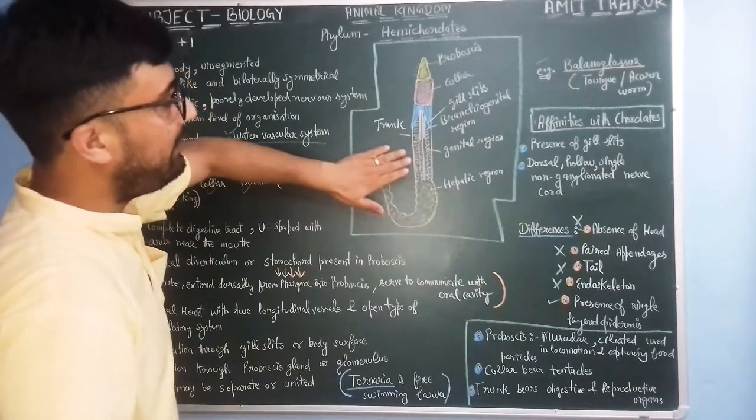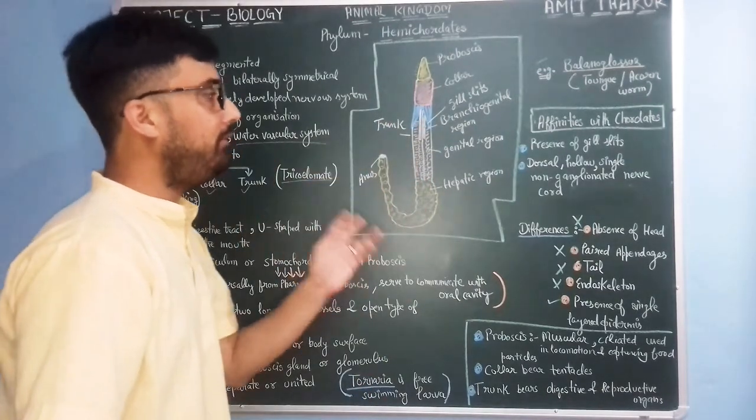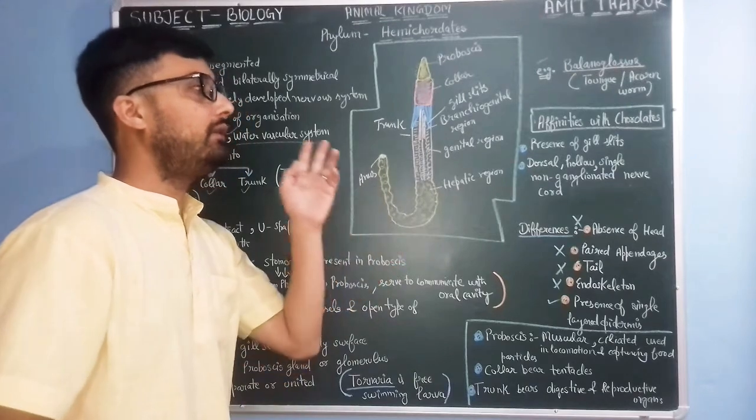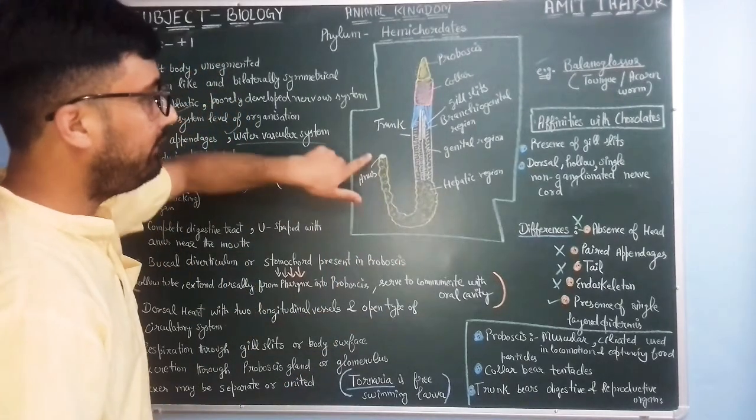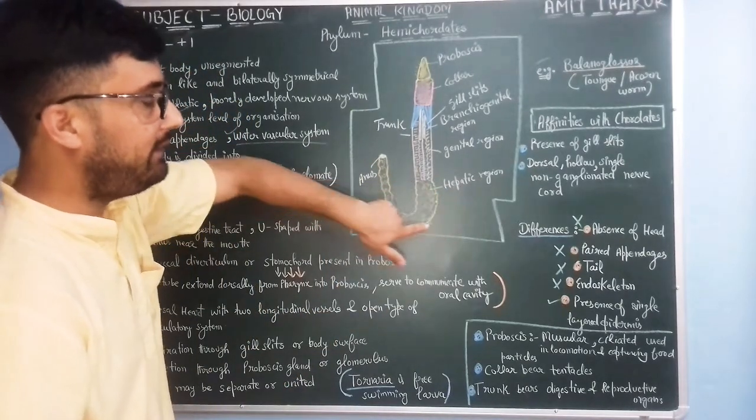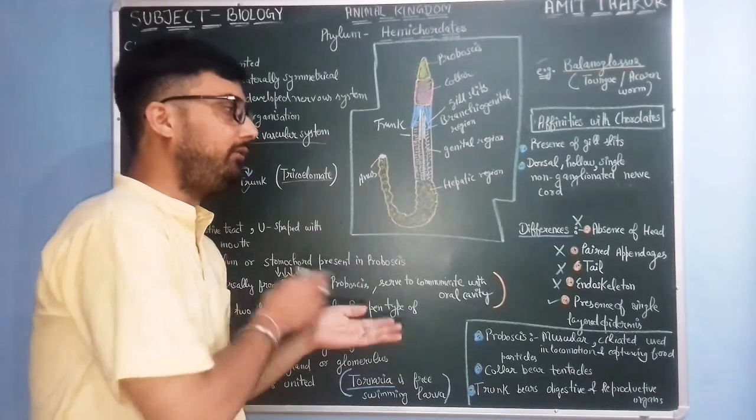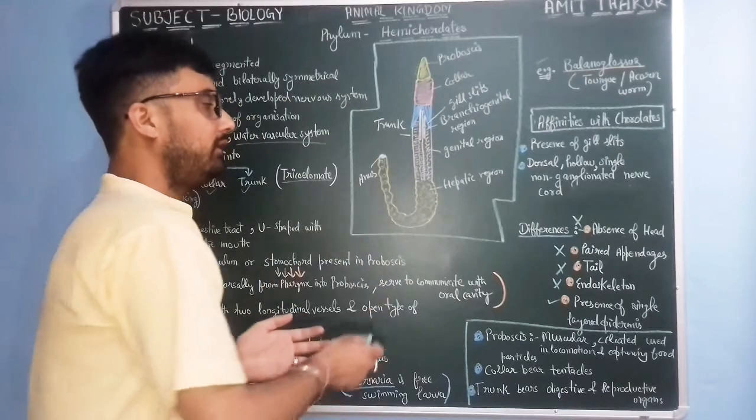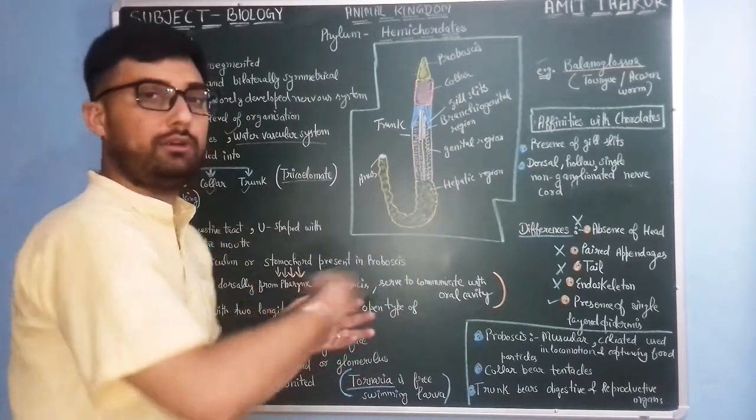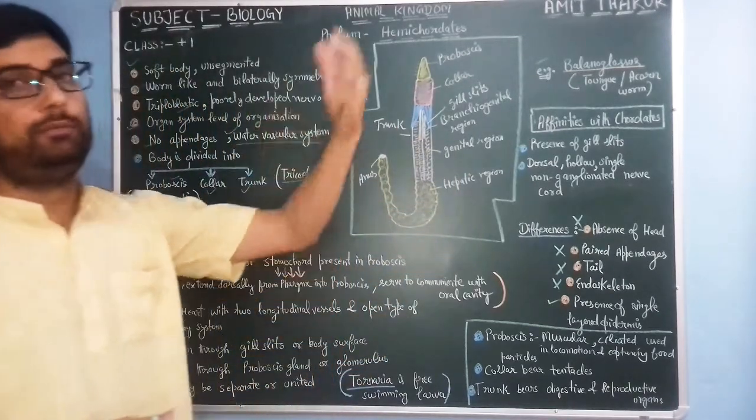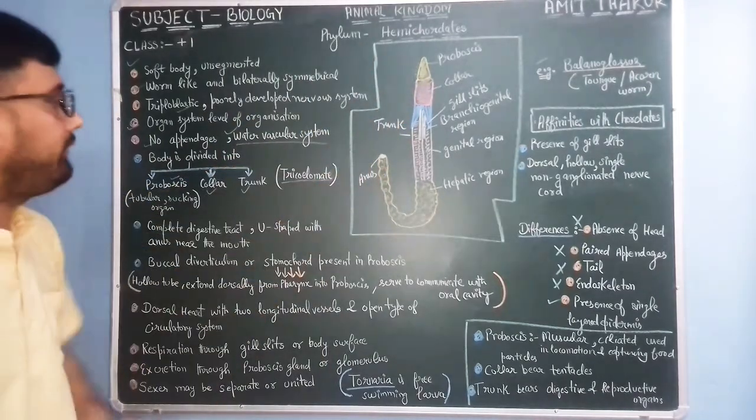This trunk region basically has digestive as well as reproductive function. This is the anus, this is the hepatic region. Open circulatory system - there are no specialized vessels for transportation of blood. This hepatic region handles blood transportation all over the body of hemicordates.